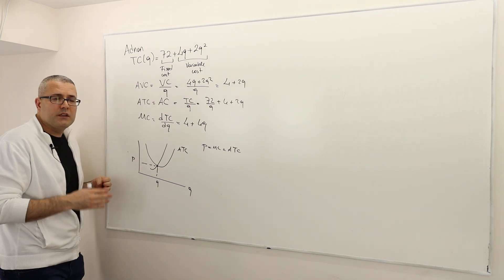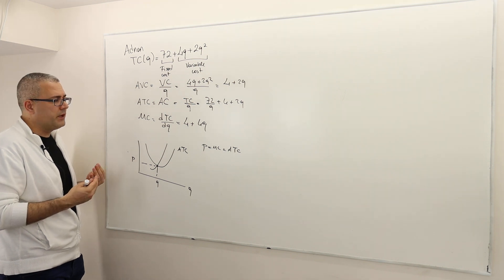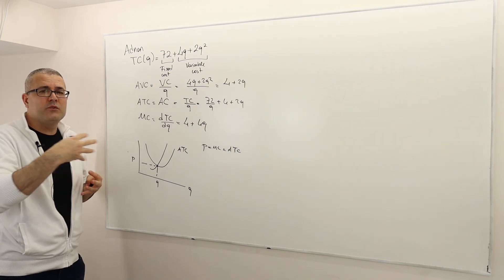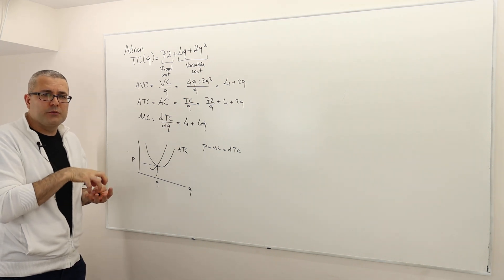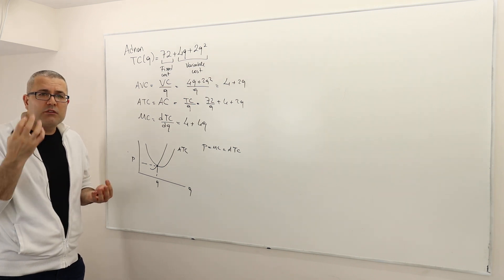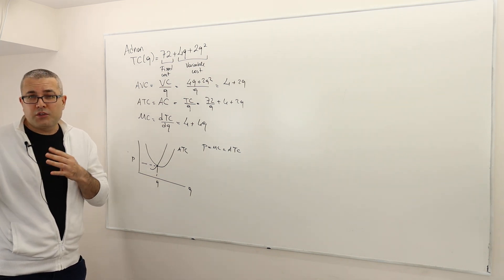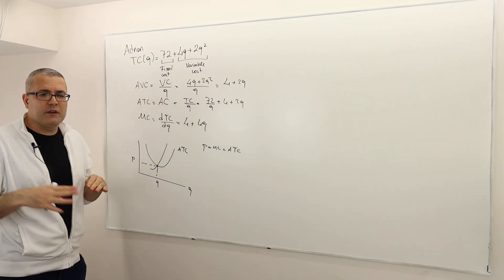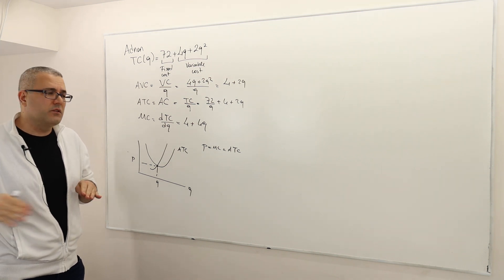The reason price equals average total cost in the long run is that long-run profit of a perfectly competitive firm must be zero — so no outsider has incentive to enter the market to make profit, and no insider has incentive to exit. Zero economic profit means your outside option is also zero, so you have no incentive to leave the market.